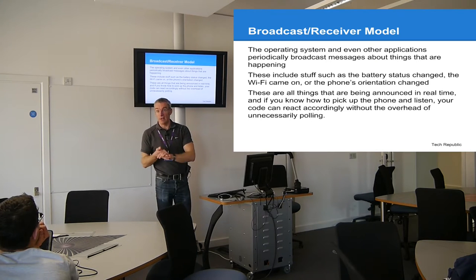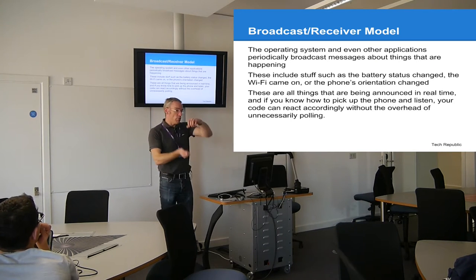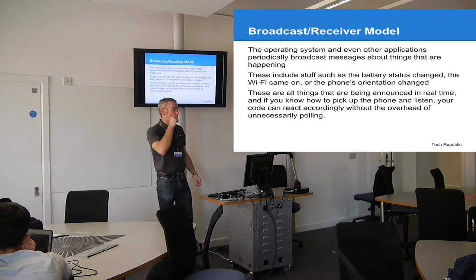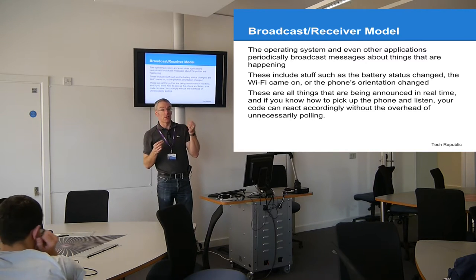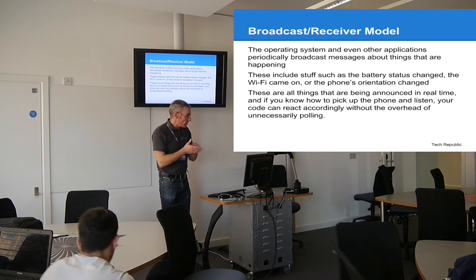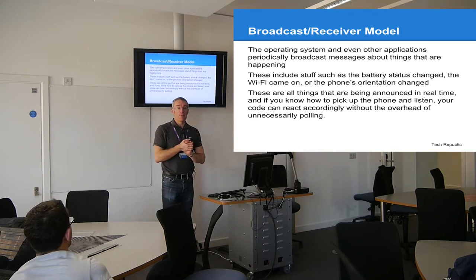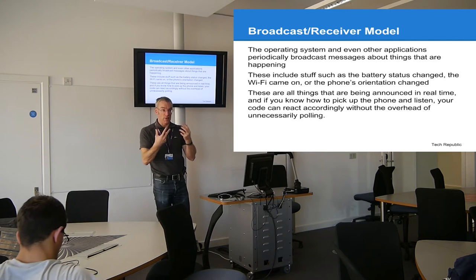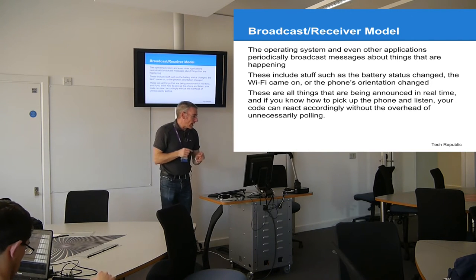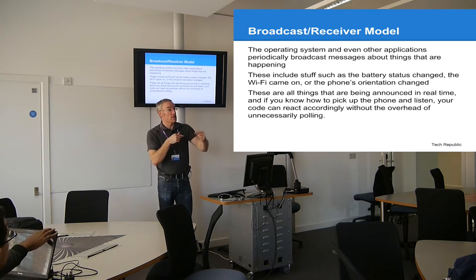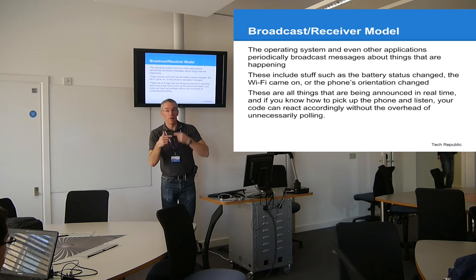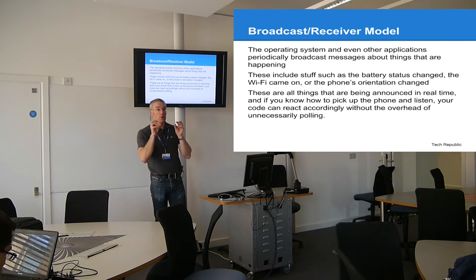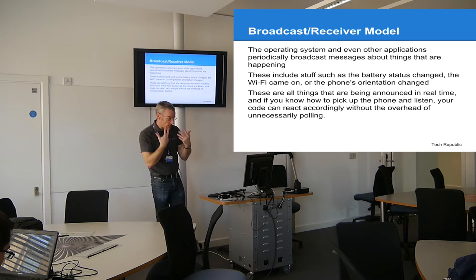Phone orientation also triggers broadcast messages. You can write applications that listen out for these messages and act on them. We're going to look at GPS as an example — setting up the GPS system to trigger messages at certain points and listening for them. The alternative would be polling, constantly asking the sensor where it is, which drains battery life. The broadcast system means we just listen out for messages as they're delivered.